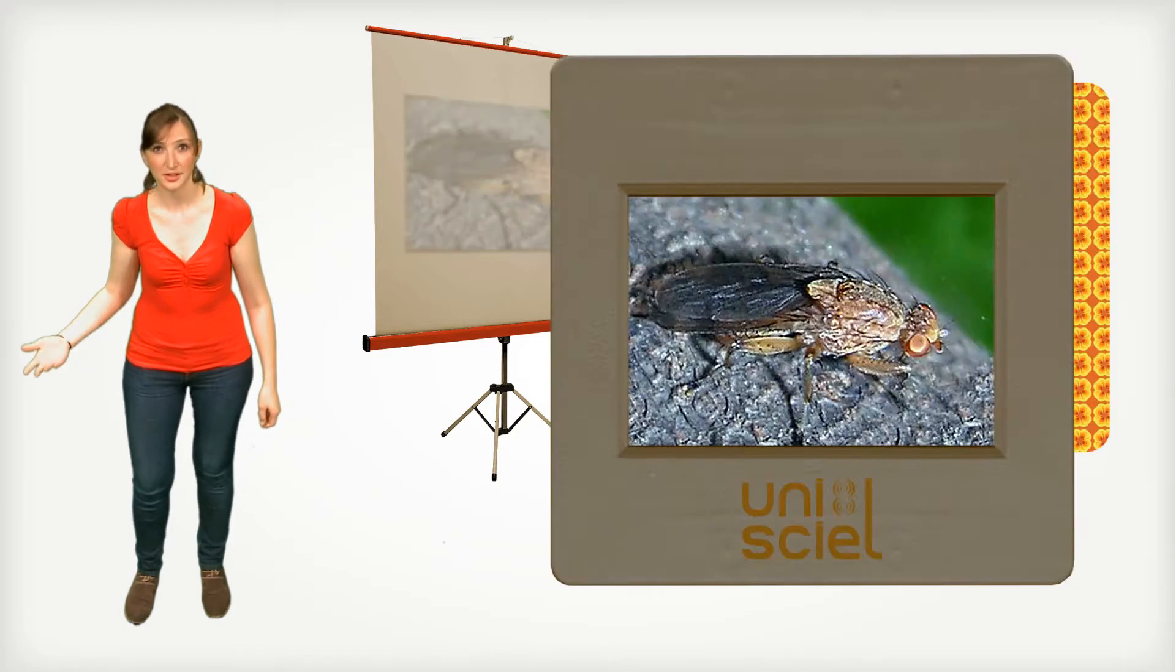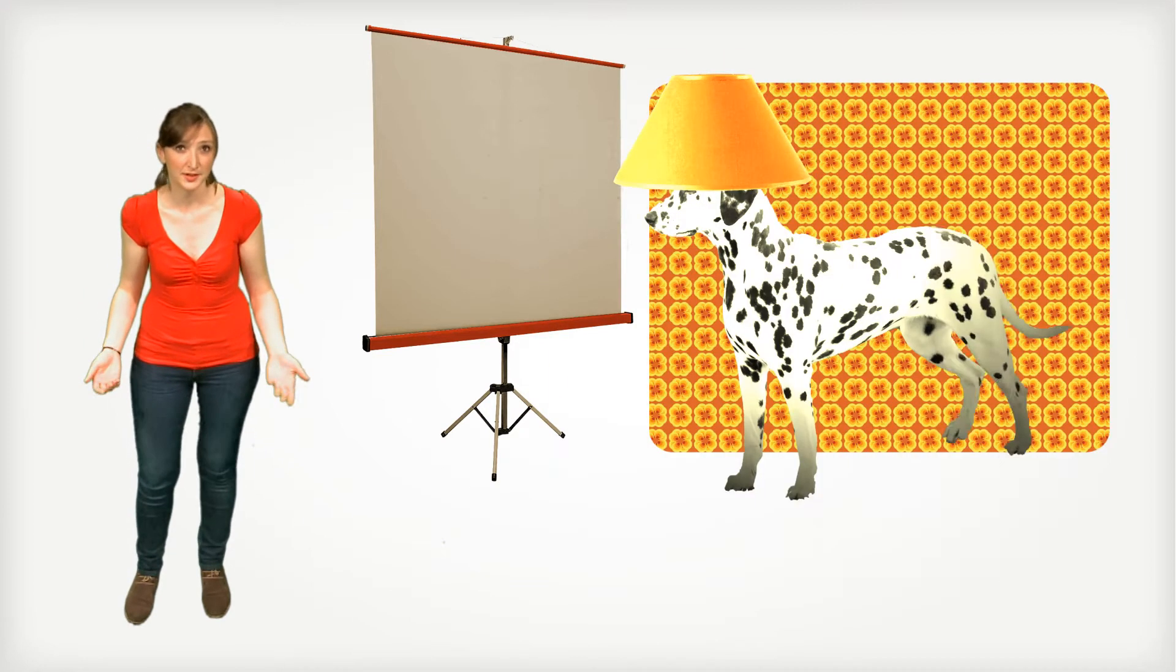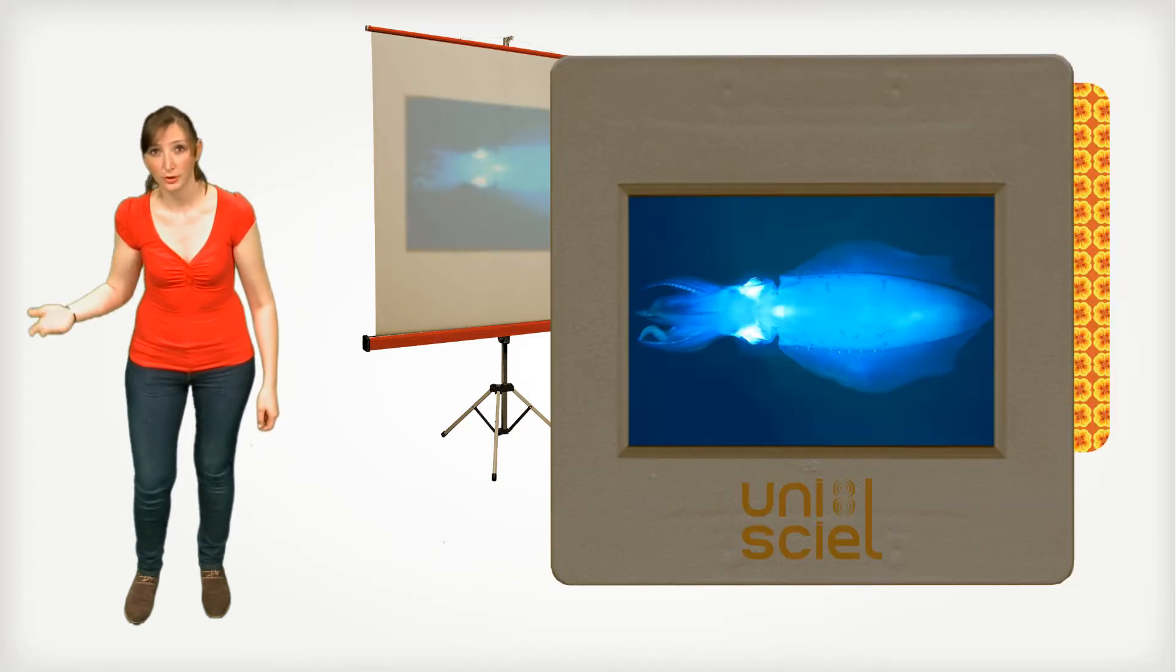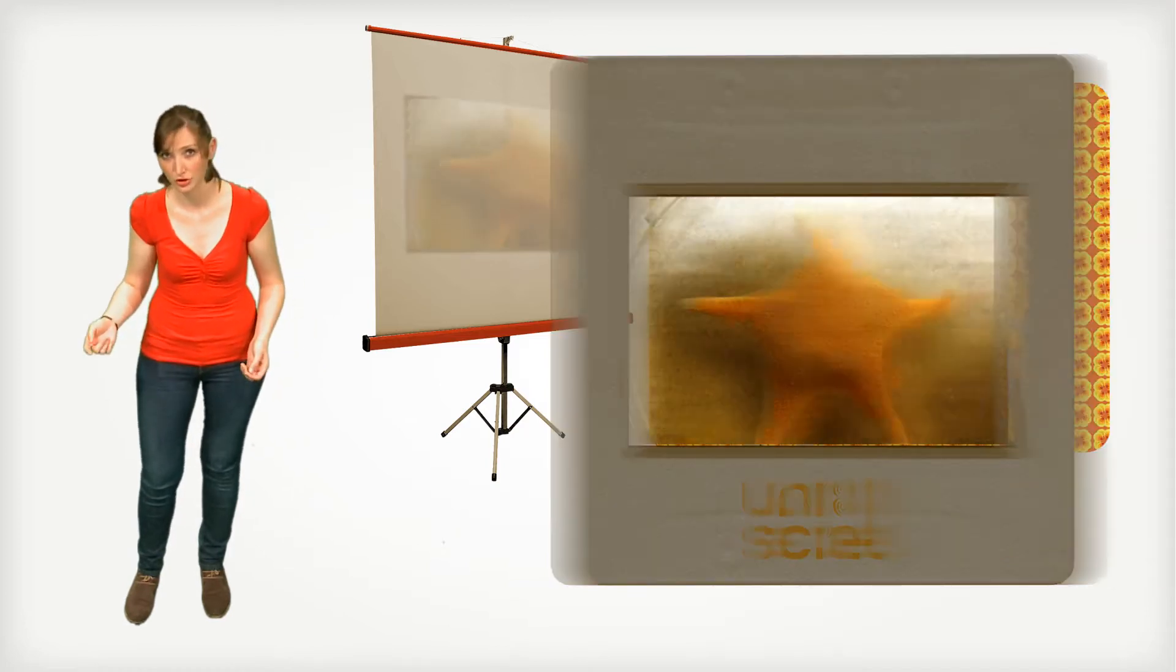Other insects, such as some flies or millipedes, for instance, shine in the night as well. There are also a lot of marine animals, such as squids, jellyfishes, starfish, corals and even sharks.